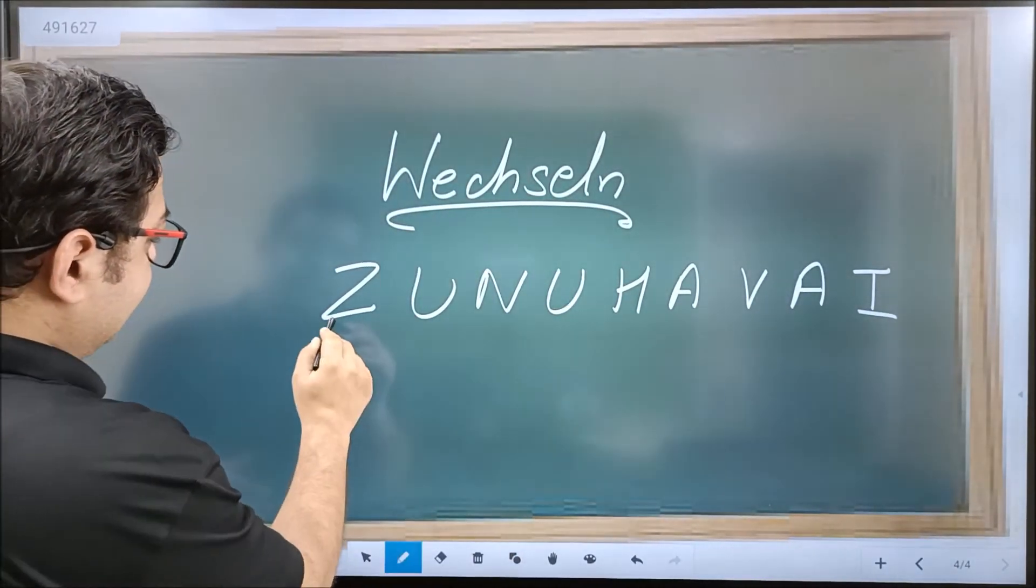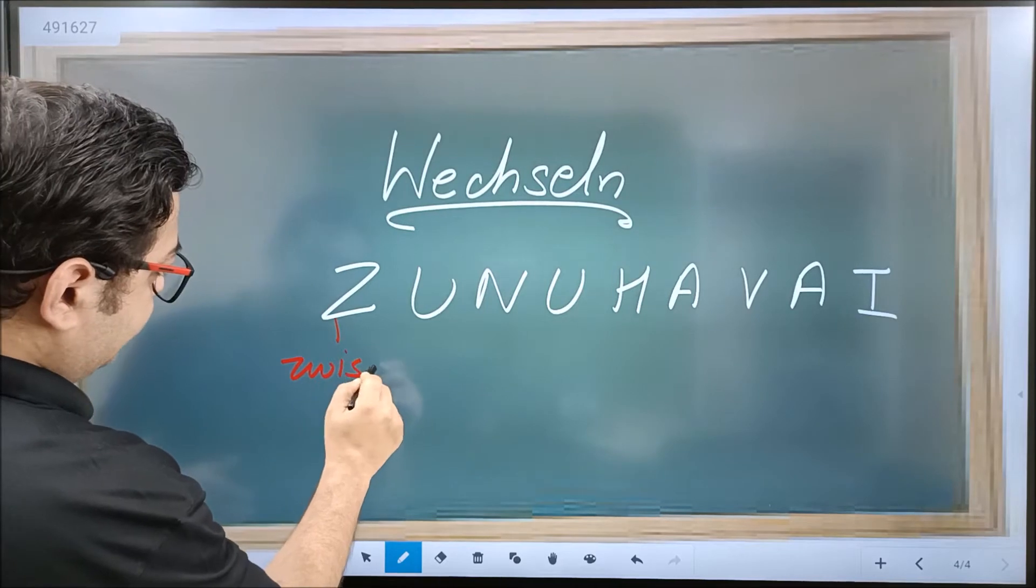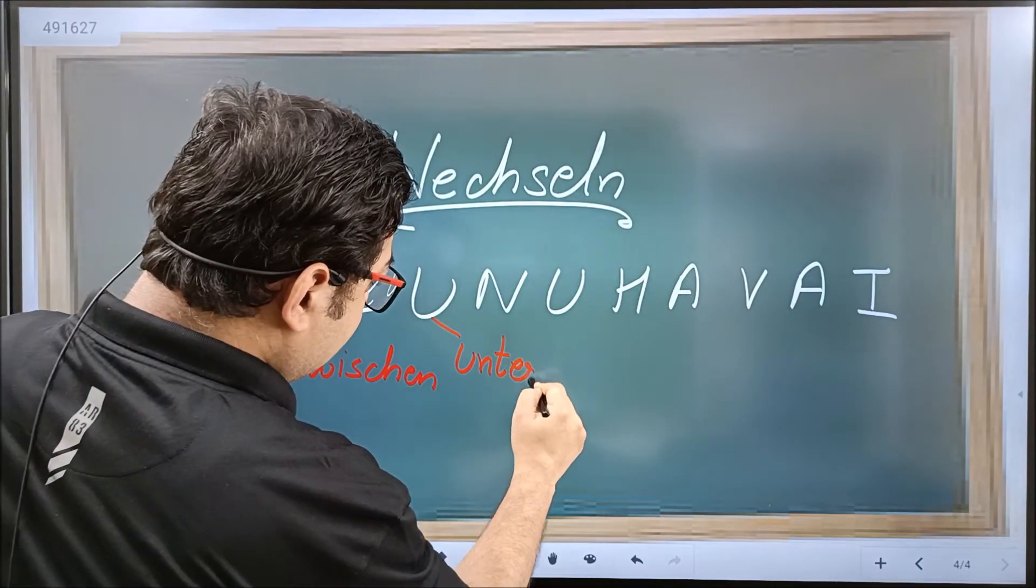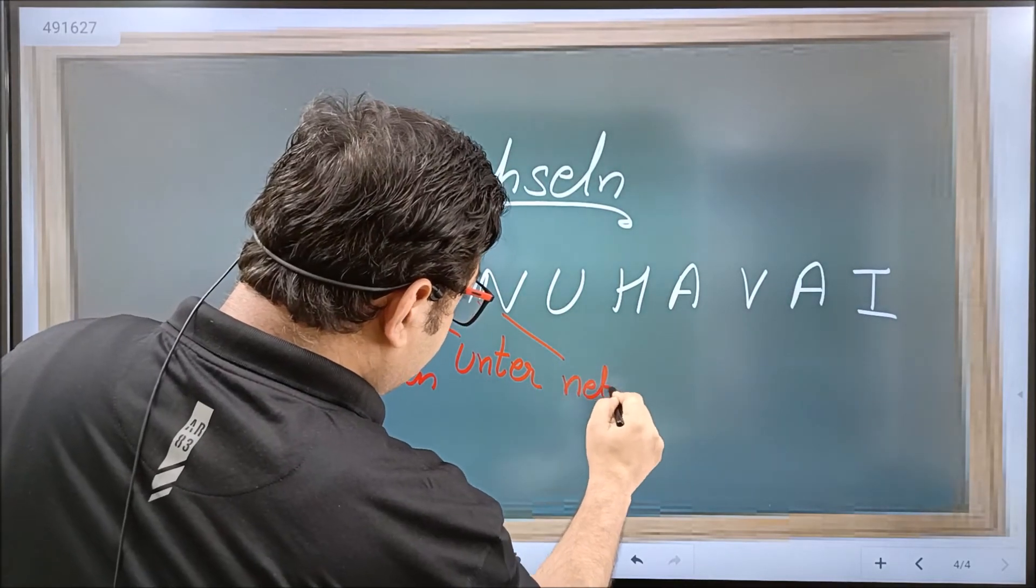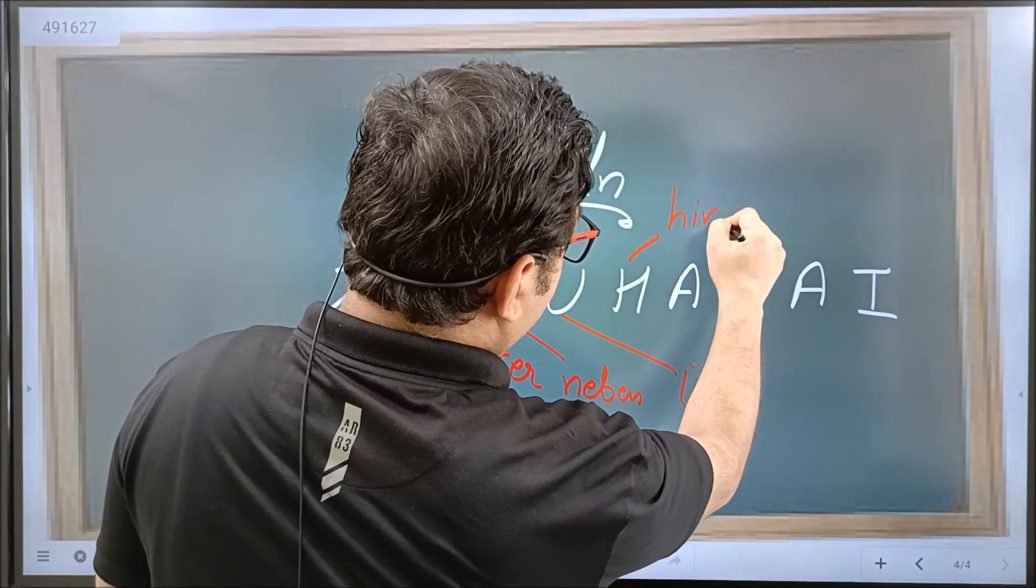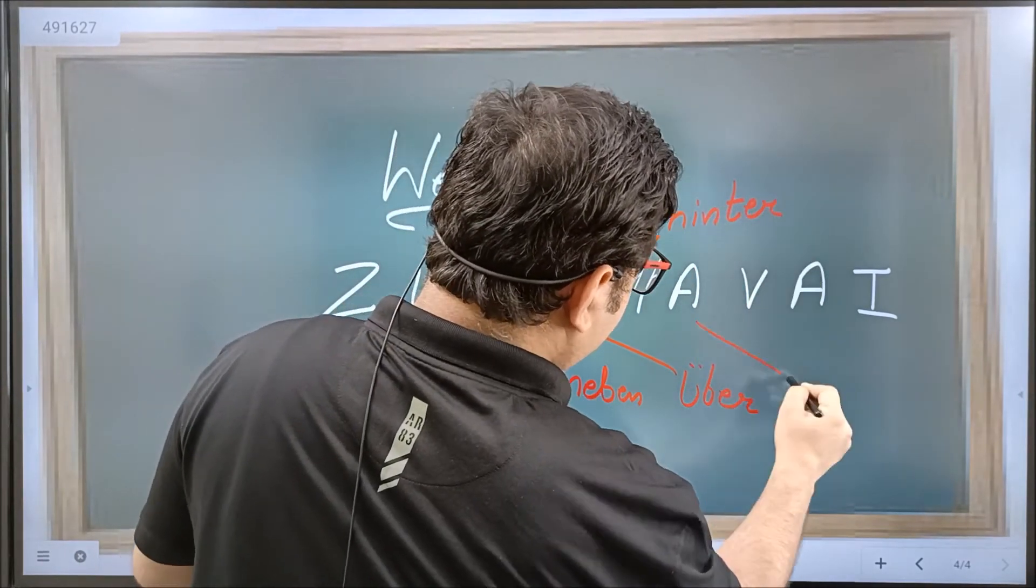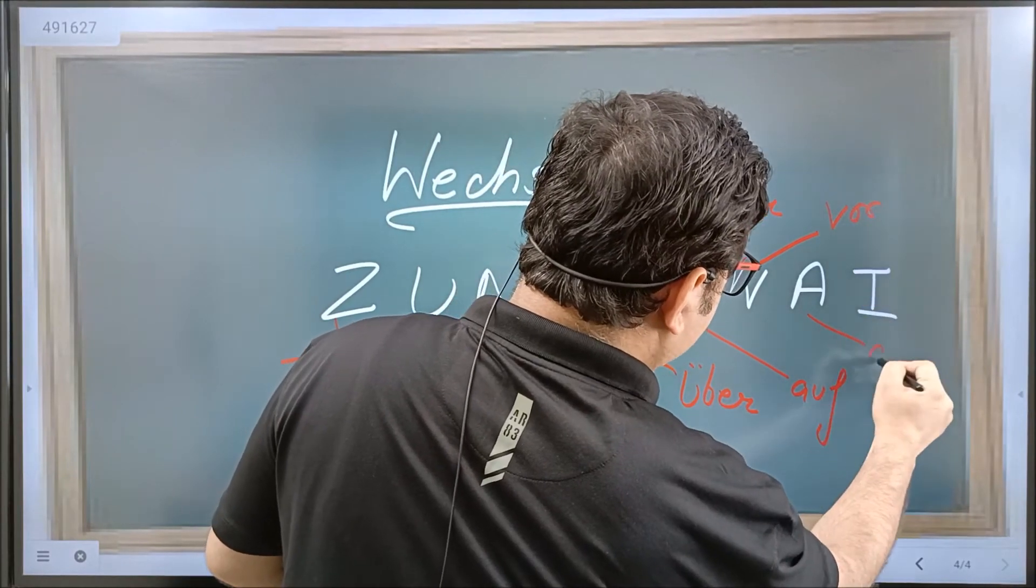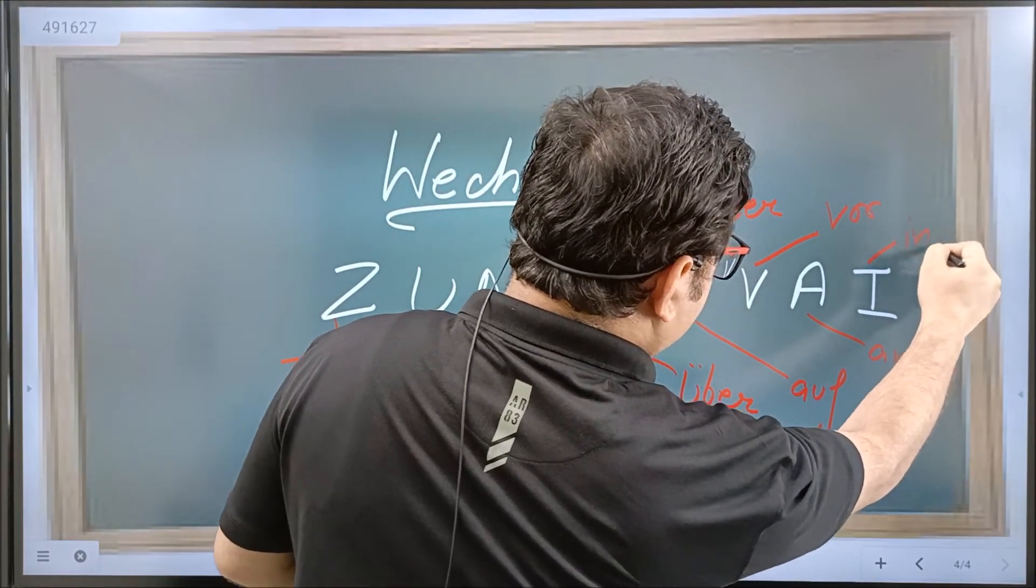Where Z represents zwischen, U is unter, N is neben, Ü is über, H is hinter, A is auf, V is vor, A is an, and I is in.